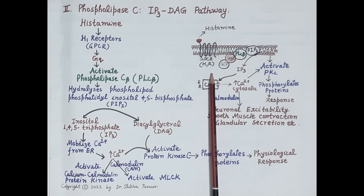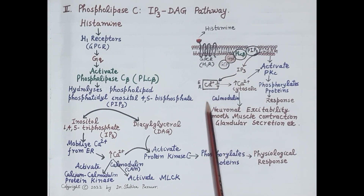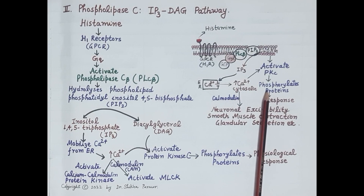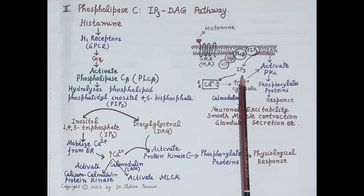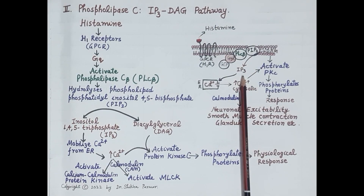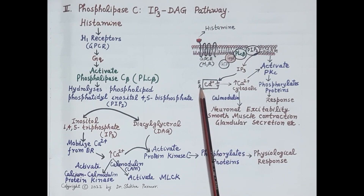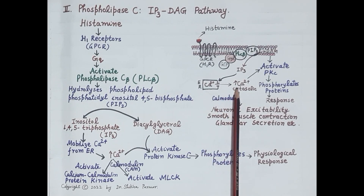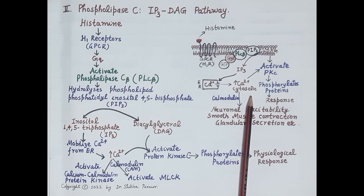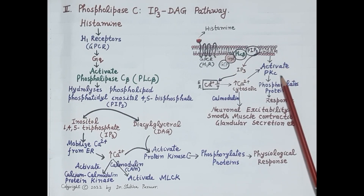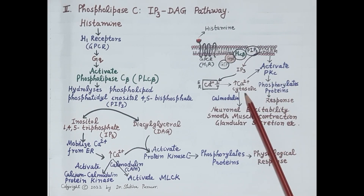Inositol triphosphate (IP3) mobilizes calcium from the endoplasmic reticulum into the cytoplasm, increasing cytosolic calcium. On the other hand, diacylglycerol recruits and activates the enzyme protein kinase C in the presence of calcium.